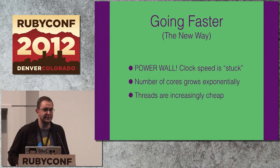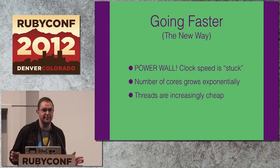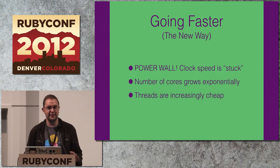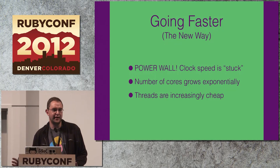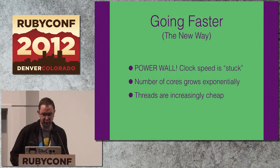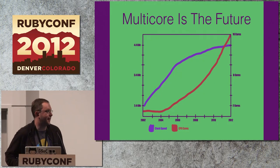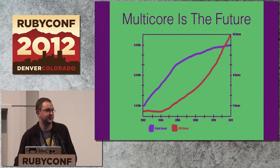The hardware designers have hit the power wall — they just can't keep cranking up the clock speed like they used to. But what they can do is keep adding CPU cores. We're seeing exponential growth in CPU cores, operating systems are getting good schedulers, and threads are getting cheap in the same way performance used to be cheap. You could just sit back and wait for more and more CPU cores. Multi-core is the future. CPU speed is not going up, but the number of CPU cores is going exponentially up.